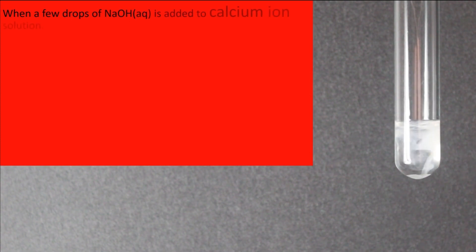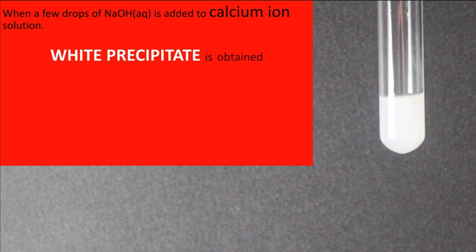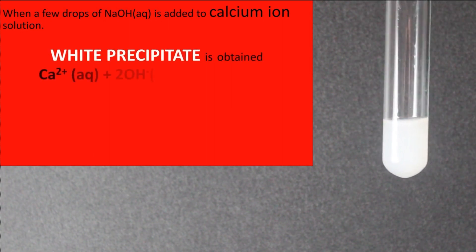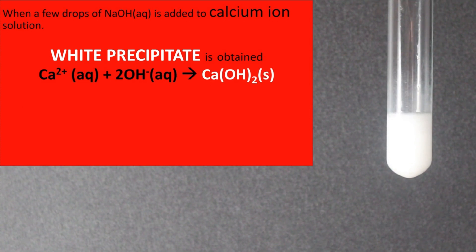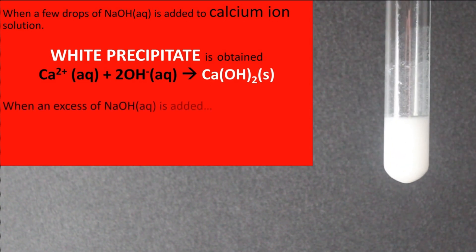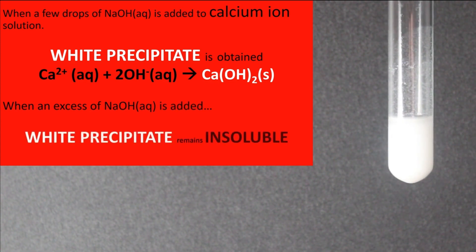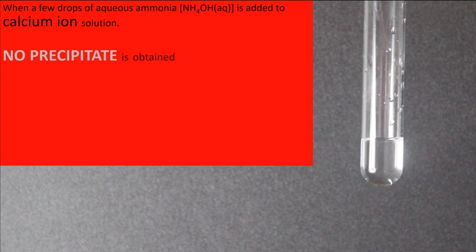Calcium ions give a white precipitate with a few drops of sodium hydroxide. When sodium hydroxide is added in excess, the white precipitate remains insoluble. Calcium ions do not form a precipitate with aqueous ammonia.